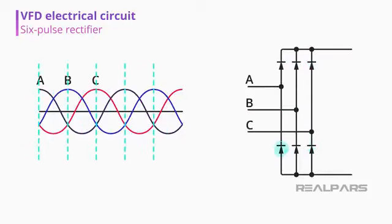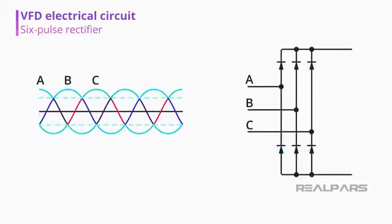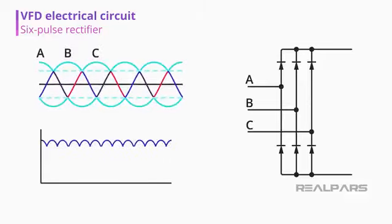As well as for the 3 diodes on the negative side of the bus. That results in 6 pulses of currents as each diode opens and closes. The resultant waveform will look like this.